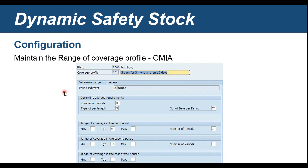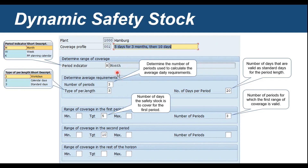To start with the prerequisites to enable the dynamic safety stock calculation, the first thing is that we need to create a coverage profile in that particular plant. That would be part of the configuration, and you can enable that by using transaction OMIA, where you're going to create the coverage profile for that plant. While configuring the coverage profile, there are a few key parameters that you have to maintain in the configuration setup.